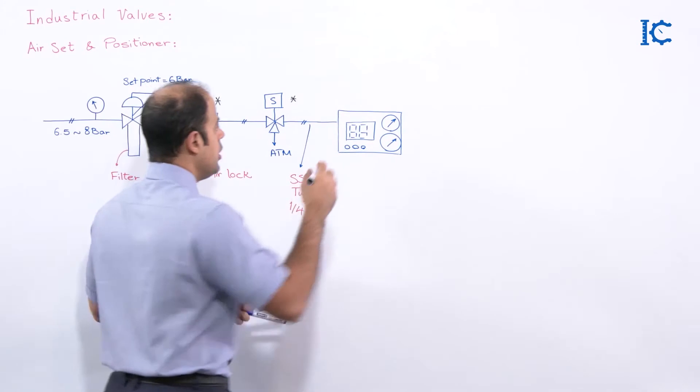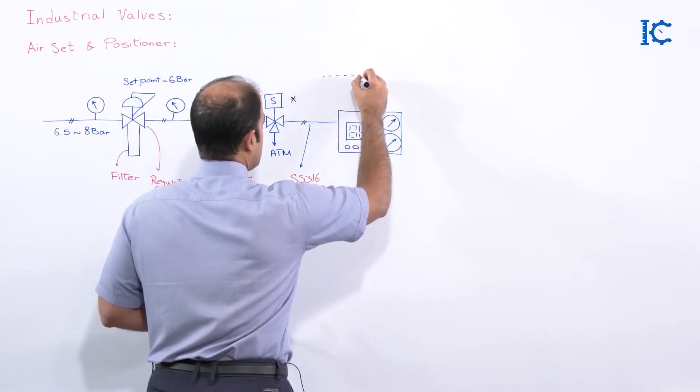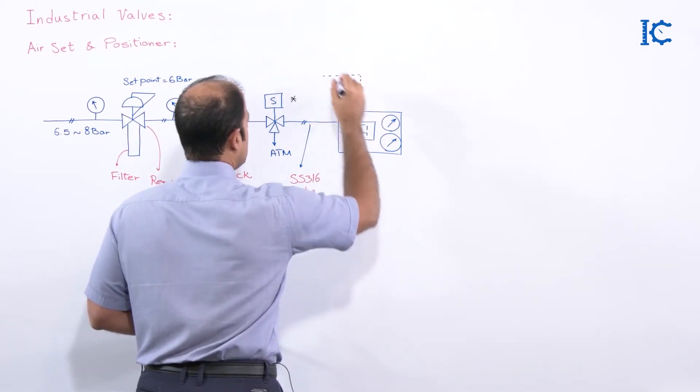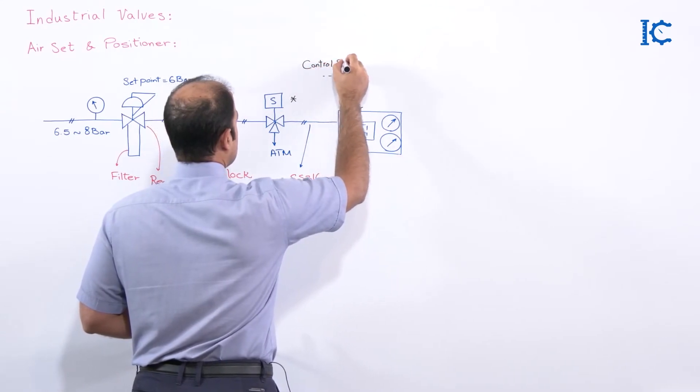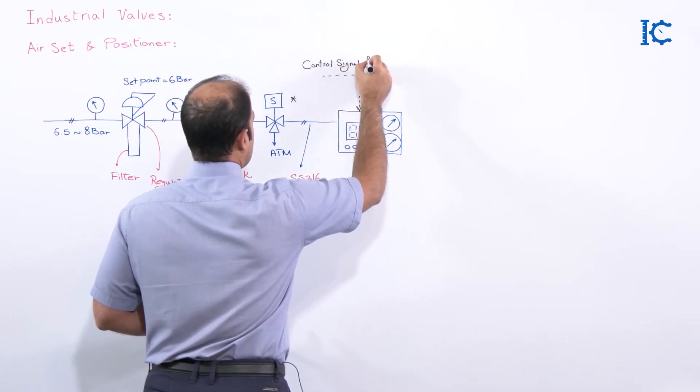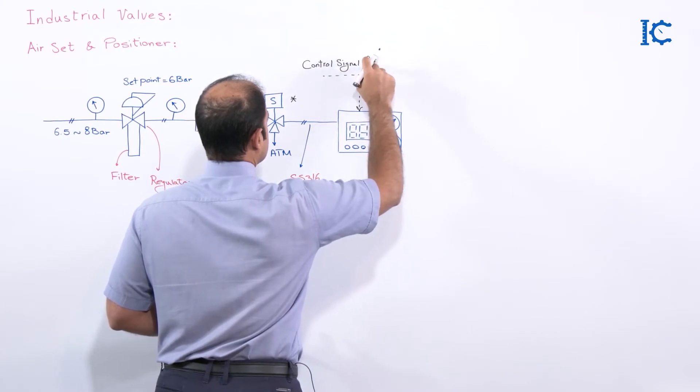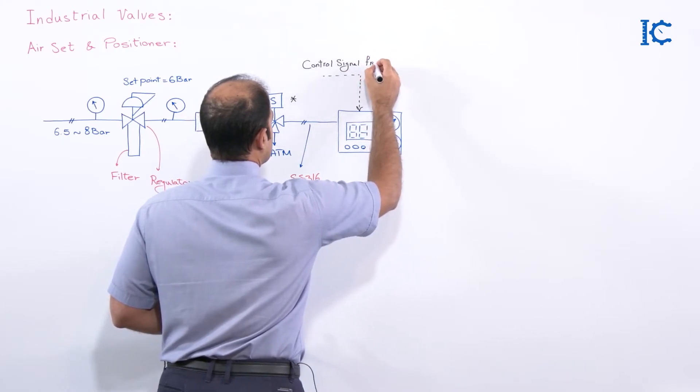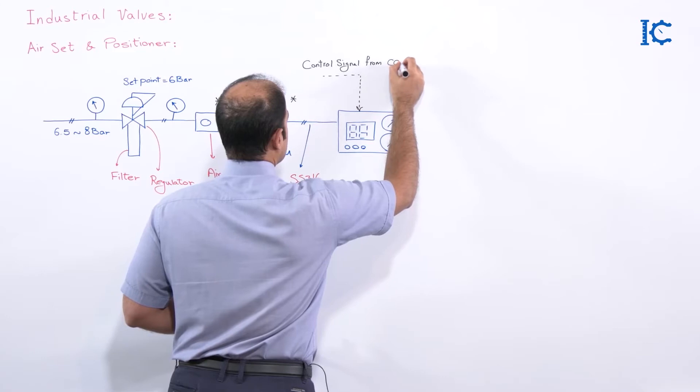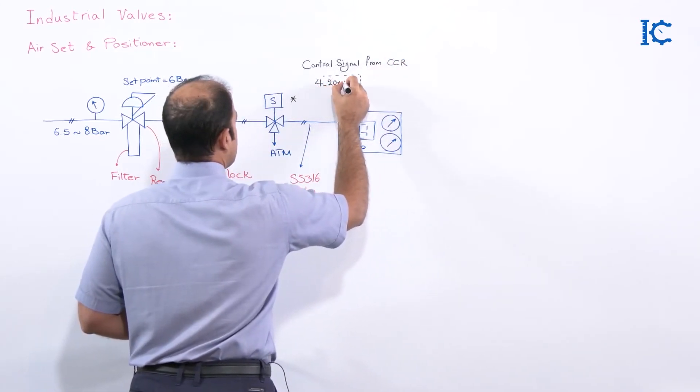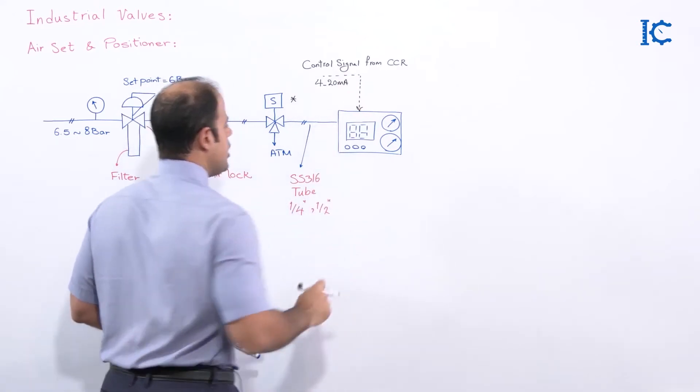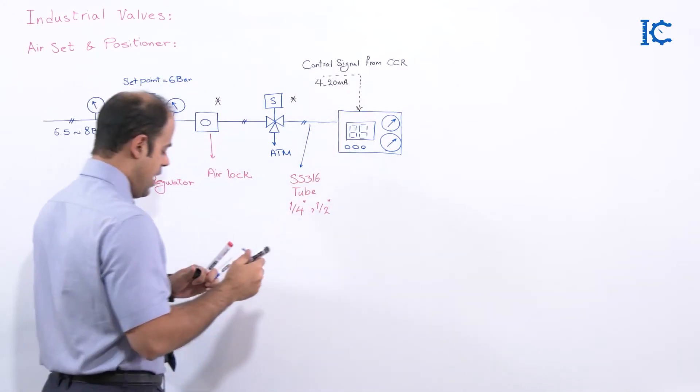As you know, there must be a control signal from control room, from the central control room, and as you know that it's 4-20 mA. It sends to the positioner and after that the outlet tube is going to be connected to the actuator.